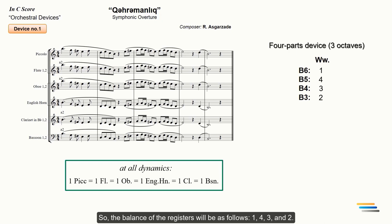The B3 will be played by two bassoons. So, the balance of the registers will be as follows: 1, 4, 3 and 2. There is only one piccolo here. However, this is not a problem since the piccolo is in its strong register and will shine even without doubling. The B5 register is more strong as it is played by four instruments. You can reduce this register by using a single oboe or a flute instead of A2. But this is not necessary to do it.